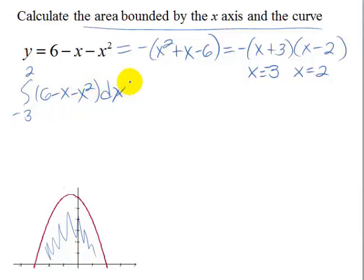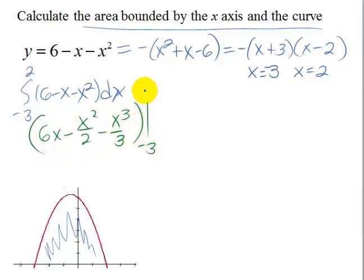We can now evaluate this integral using the fundamental theorem, so we need an antiderivative. That's going to be 6x minus x squared over 2 minus x cubed over 3, and we need to evaluate that from negative 3 to 2.